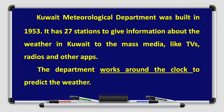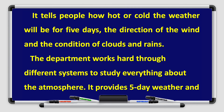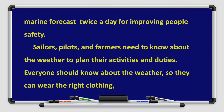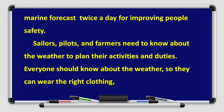Kuwait's Meteorological Department was built in 1953. It has 27 stations to give information about the weather in Kuwait to the mass media like TVs, radios, and other apps. The department works around the clock to predict the weather. It tells people how hot or cold the weather will be for five days, the direction of the wind, and the condition of clouds and rains. The department works hard through different systems to study everything about the atmosphere. It provides five-day weather and marine forecast twice a day for improving people's safety.